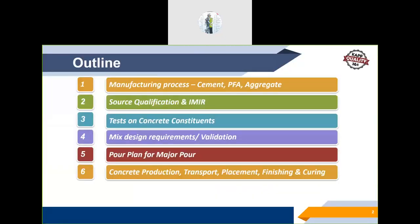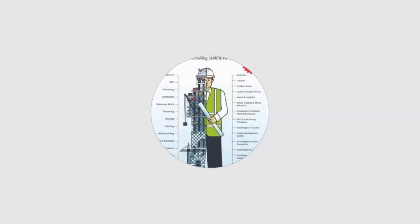I am going to cover the following topics. This is the outline of my presentation: manufacturing process of cement, fly ash, aggregate, source qualification of concrete ingredients, how material is inspected once received at the construction site, tests on concrete ingredients, mix design validation, pour plan importance for major pours, concrete production batch plant checklist, transportation through transit mixers, placement through crane bucket, boom placer, and finishing and curing. We will conclude with post-concrete inspection.